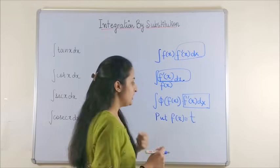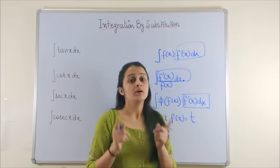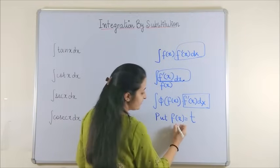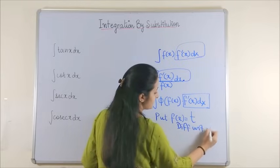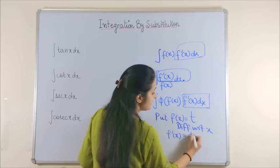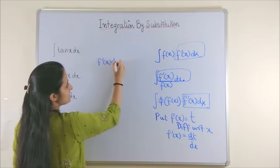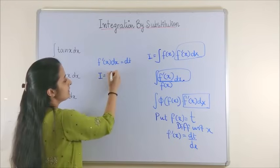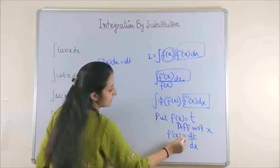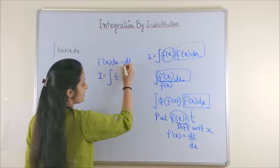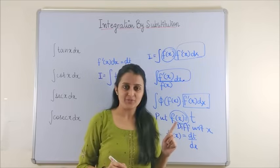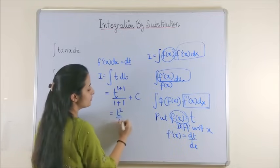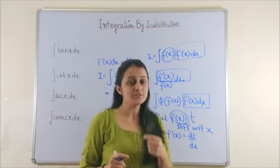What we do is put the function equal to a new variable t — in short, substituting that function for which the derivative is already present. When we differentiate both sides with respect to x, we get f'(x) = dt/dx, which means f'(x) dx = dt. Taking the first form, the integral transforms: f(x) is replaced with t and f'(x) dx becomes dt, giving us t raised to power 1, so t²/2 + c.